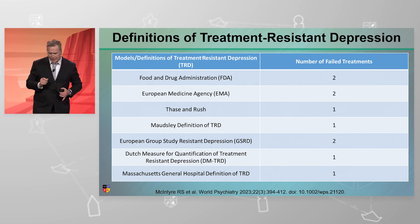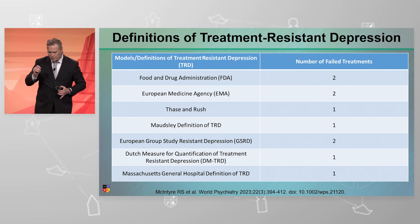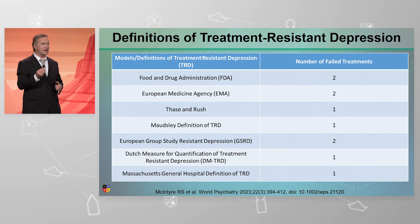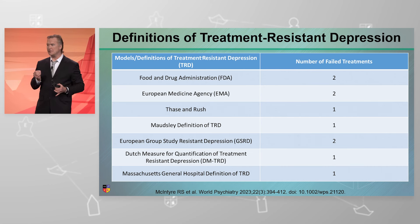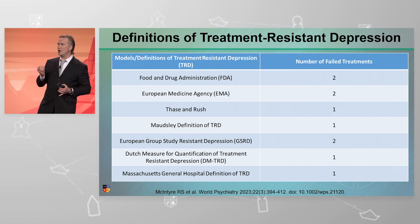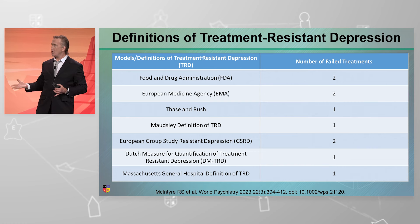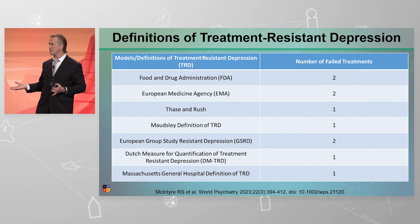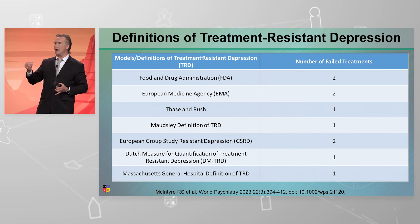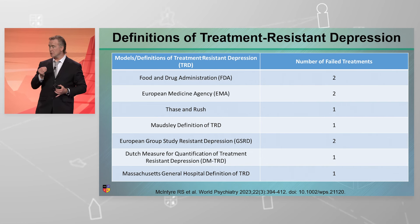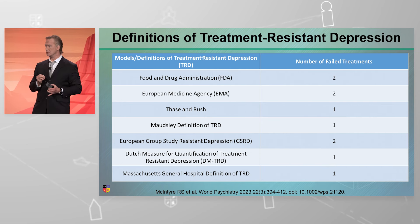One might ask: what is the importance of having this definition? There are many reasons why we need it. First of all, it is very difficult to precisely estimate how common treatment resistant depression is if we don't have a consensus definition. In the academic area, as we try to identify risk factors, preventative factors, and underlying mechanisms, and how best to treat this phenotype, we clearly need a consensus definition.